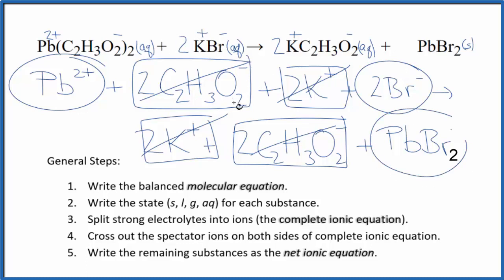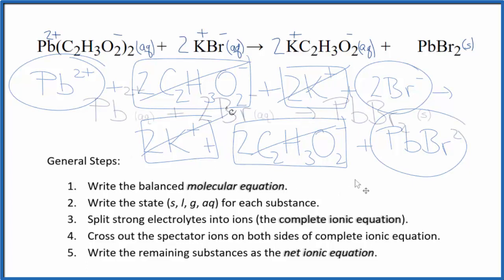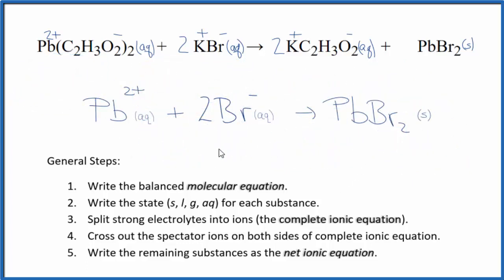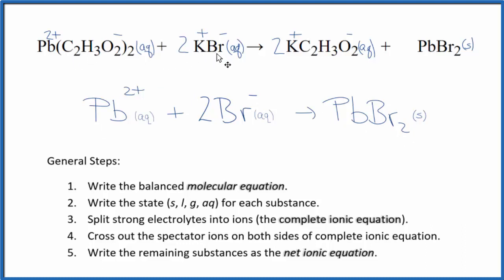Let me clean this up and write the states in — we'll have our net ionic equation. This is the balanced net ionic equation for lead 2 acetate plus potassium bromide. You'll note that charge is conserved: we have 2+ on the left, and two times the 1- gives us 2-, for a net charge of zero. On the product side we also have a net charge of zero. The atoms are balanced as well. So this is the balanced net ionic equation for Pb(C2H3O2)2 plus KBr. This is Dr. B. Thanks for watching.